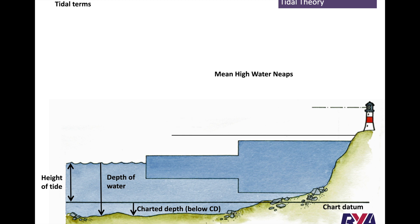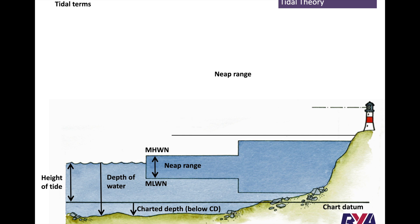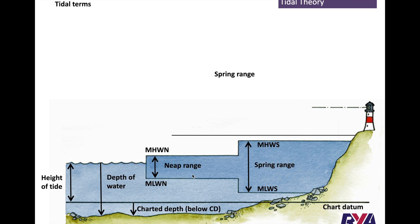Mean high water neaps is the high water on a neap tide. Mean low water neaps is the low water on the neap tide, and the range between them is small. Mean high water springs is the high water on spring tides, and mean low water springs is the low water on spring tides — the range is the difference between them, and this range is bigger for springs than for neaps.